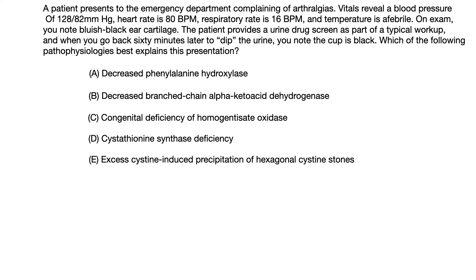A patient presents to the emergency department complaining of arthralgias. Vitals reveal a blood pressure of 128 over 82, heart rate is 80, respiratory rate is 16, and their temperature is afebrile. On exam, you note bluish black ear cartilage. The patient provides a urine drug screen as part of a typical workup, and when you go back 60 minutes later to dip the urine, you note that the cup is now black.